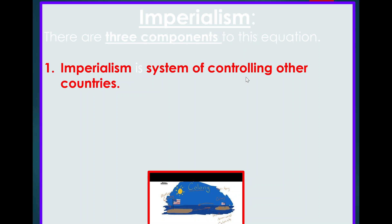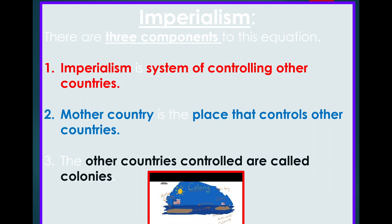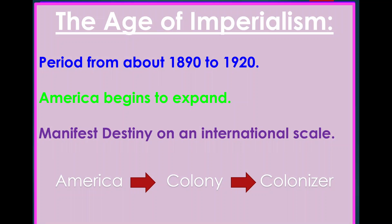Imperialism is a system of controlling other countries. The mother country is the country that controls those other places. The places that are controlled are called colonies. The age of imperialism is from about 1890 to 1920.